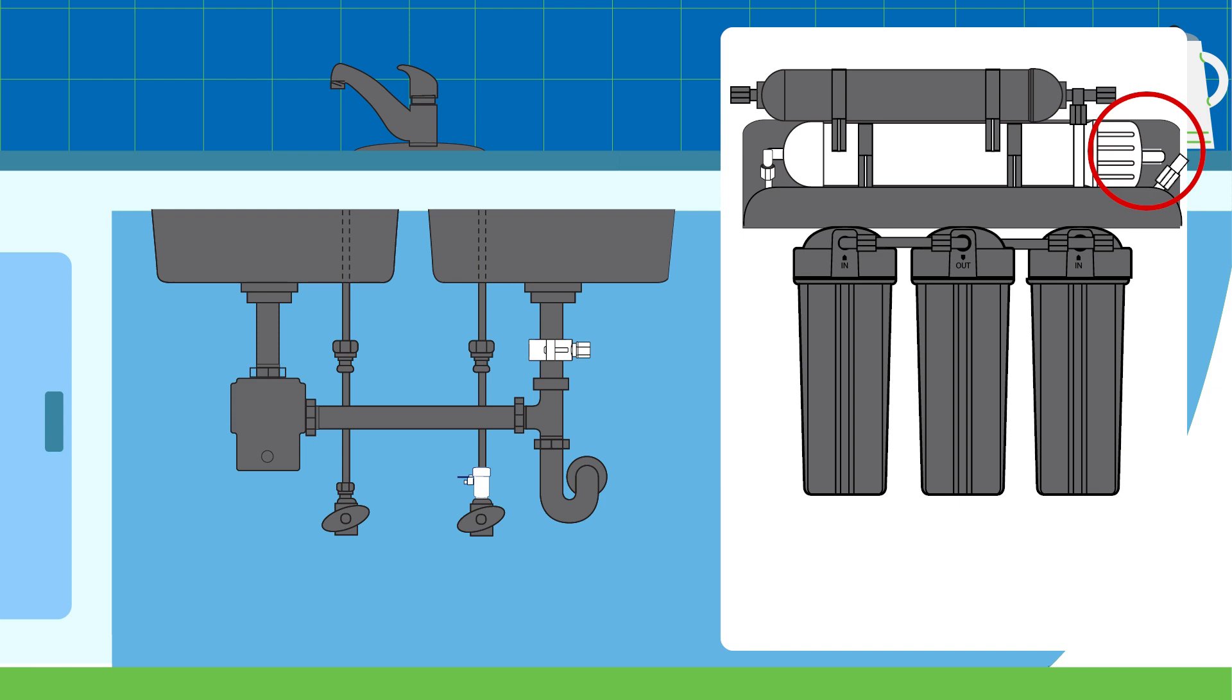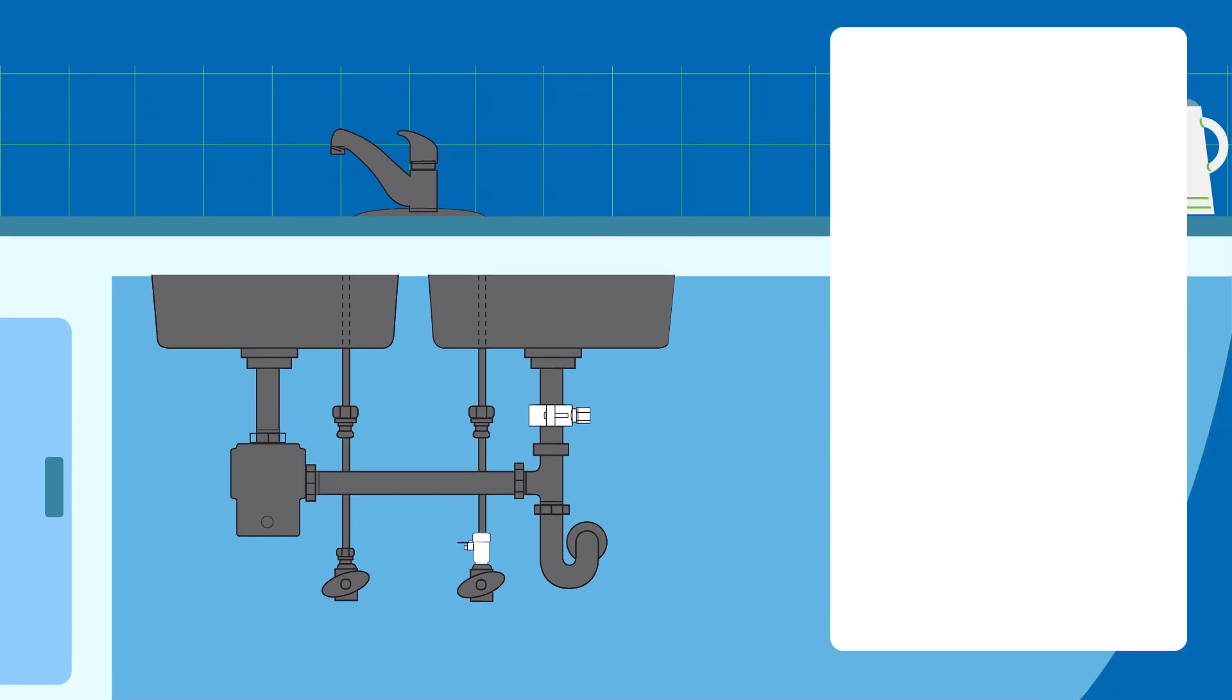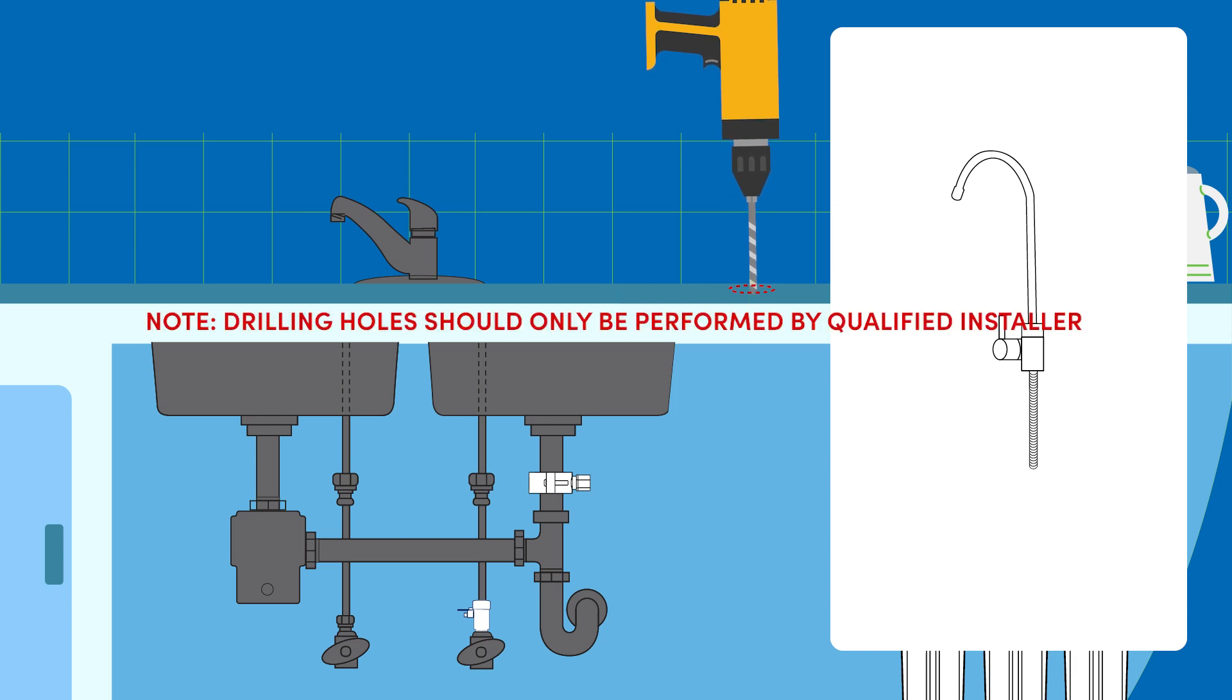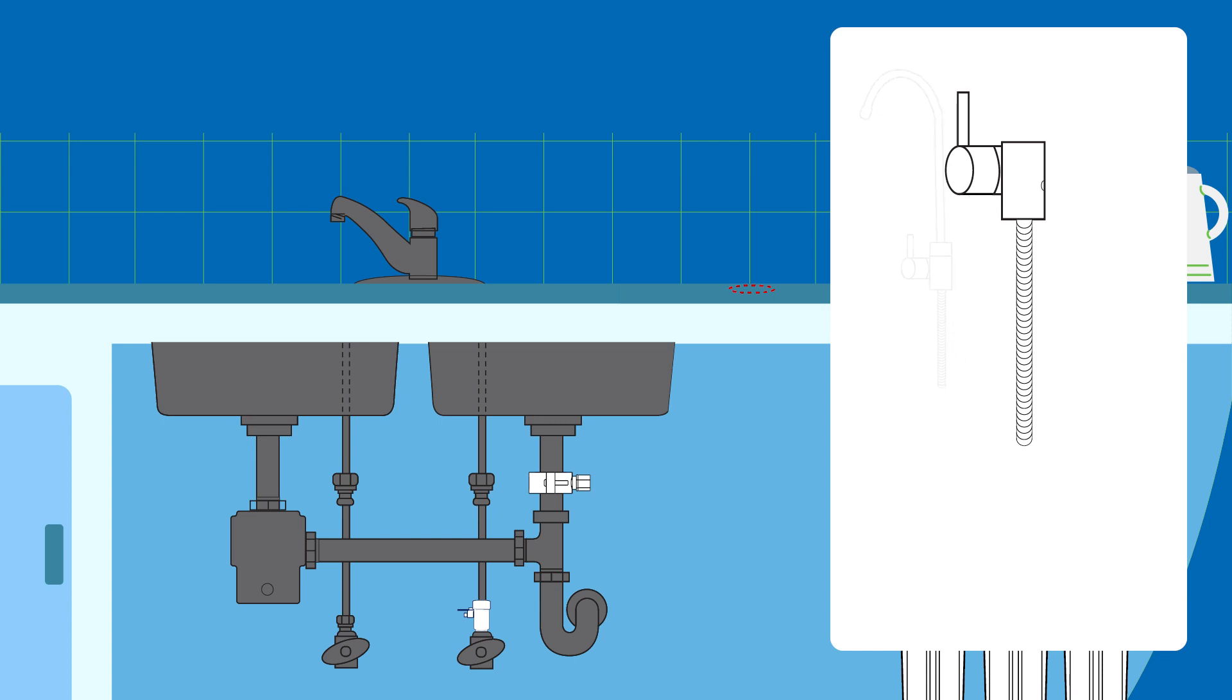To install the RO faucet, remove the faucet base from the package and ensure it can mount flat against the surface before drilling a 7/8 inch (22 millimeters) hole to house the faucet. Drilling holes into solid surfaces should only be performed by a qualified installer. Assemble the faucet by inserting the spigot into the top threaded hole of the handle section and tighten the nut to lock it in place.